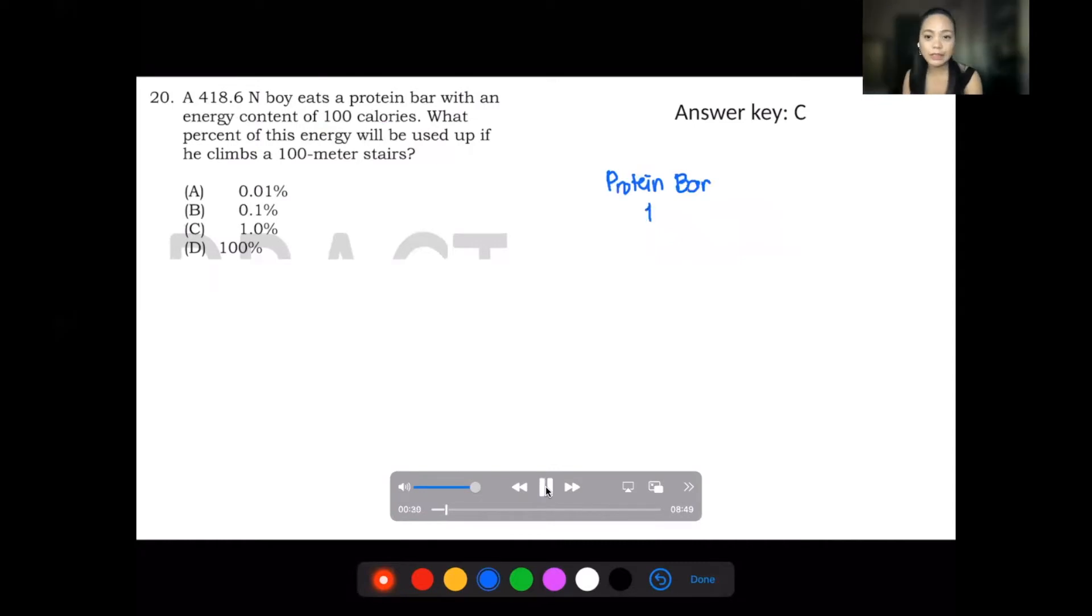So first, let's have the conversion. For one calorie, small letter calorie is just 4.184 or 4.18 joules. Well, one capital C calorie is 4,184 joules. But in the problem, we're just talking about small letter. So 100 calories of the protein bar is just times 100 of 4.184 or simply 418.4 joules.